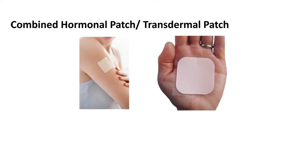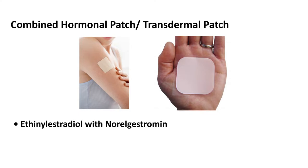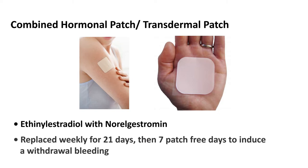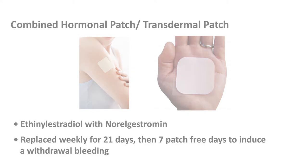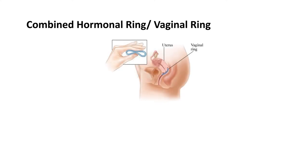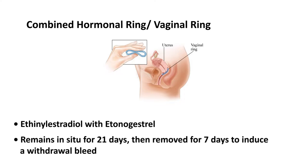Combined hormonal patch or transdermal patch contains ethinyl estradiol with norelgestromin. It is replaced weekly for 21 days, then there are 7 patch-free days to induce withdrawal bleeding. Combined hormonal ring or vaginal ring contains ethinyl estradiol with etonogestrel. It remains in situ for 21 days, then is removed for 7 days to induce a withdrawal bleed.